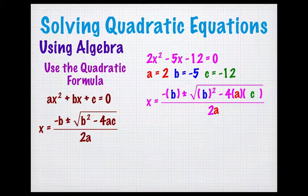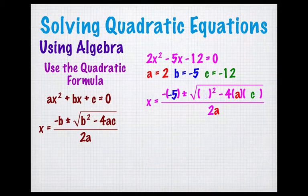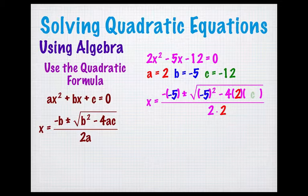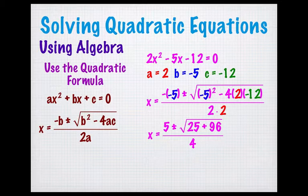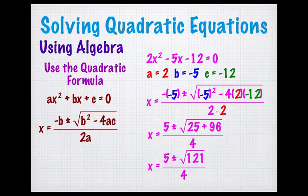Now, using the quadratic formula, I'm going to substitute negative 5 for b, 2 for the a, and negative 12 for the c. Now I do the arithmetic, remembering that a negative number squared, that negative 5 squared, is a positive 25, and combine.